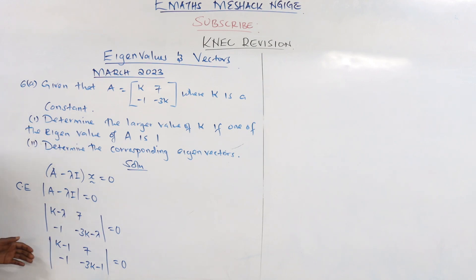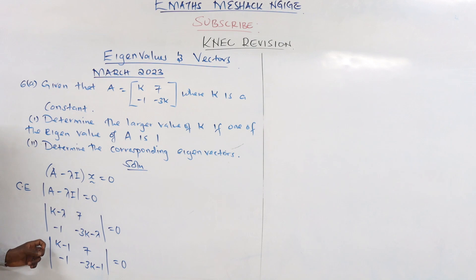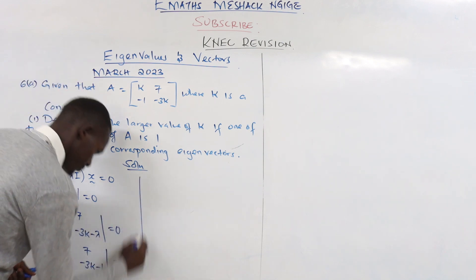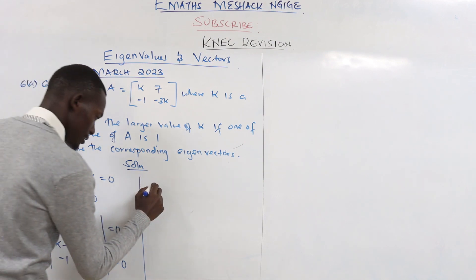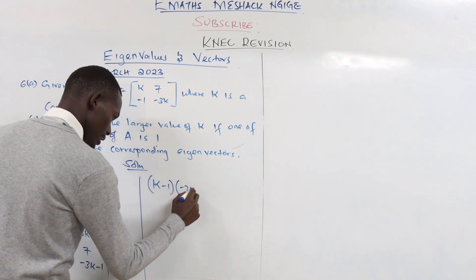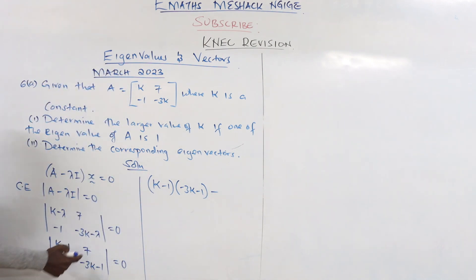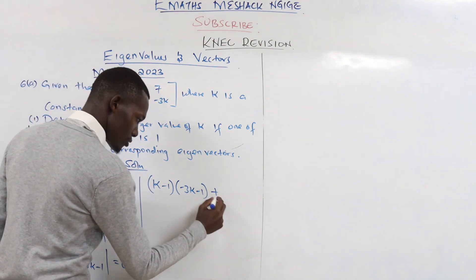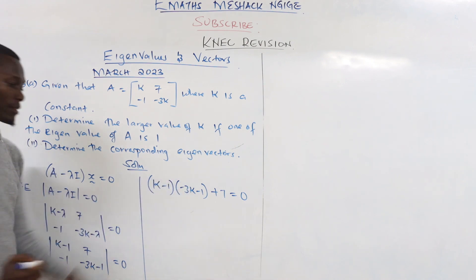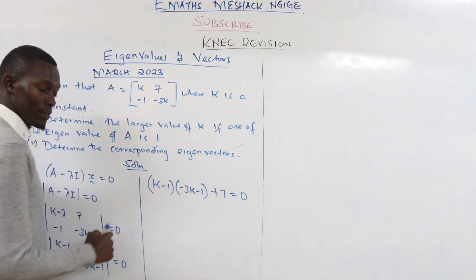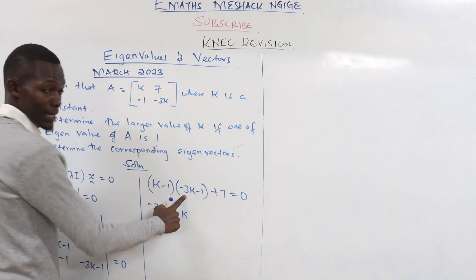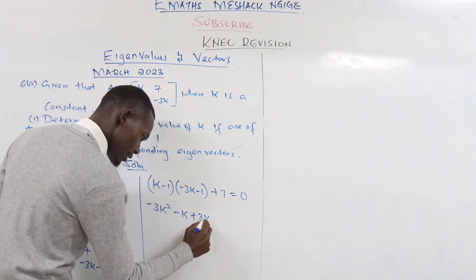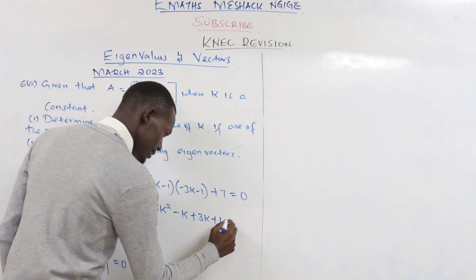We could expand with lambda first and then substitute, but it's more efficient to substitute lambda = 1 directly. Evaluating the determinant: (k minus 1)(negative 3k minus 1) minus (negative 1 times 7). The product of the off-diagonal terms gives negative seven, but with the negative sign it becomes positive seven. Expanding: k times negative 3k gives negative 3k squared, and k times negative 1 gives negative k.